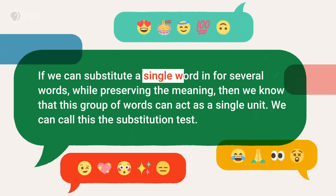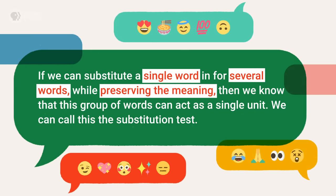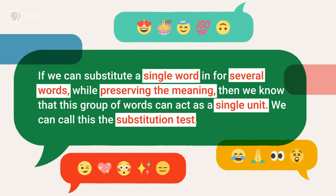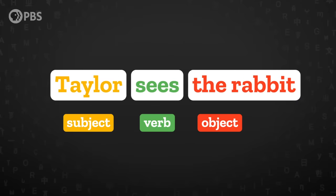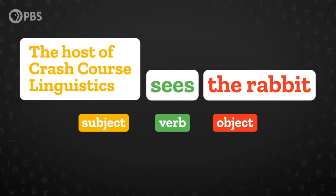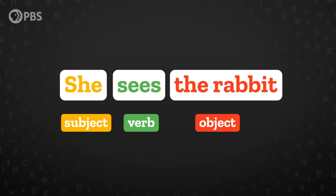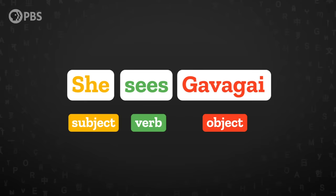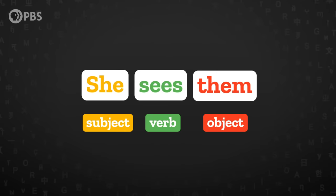Now that we're paying attention to our linguistic intuitions about grammaticality, we can use them to figure out the relationships between words within sentences. Some words go together more closely than others, and we can test this. If we can substitute a single word for several words while preserving the meaning, then we know that this group of words can act as a single unit — we can call this the substitution test. Let's start with the sentence 'Taylor sees the rabbit.' We can substitute 'Taylor' with a longer phrase like 'the host of Crash Course Linguistics sees the rabbit,' or with a shorter pronoun like 'she sees the rabbit.' We can also substitute 'the rabbit' with a longer phrase like 'the purple rabbit with long ears,' or with a single name like 'gavagai,' or a pronoun like 'them.' The subject or object can be one word or many words, but they act together as a unit. But the substitution test only gets us so far.